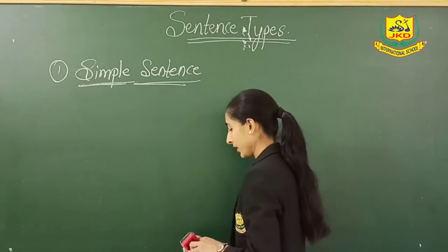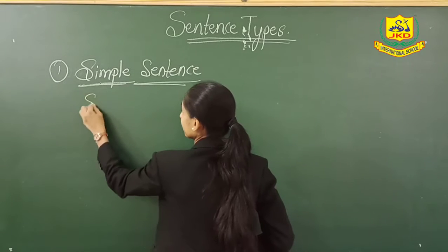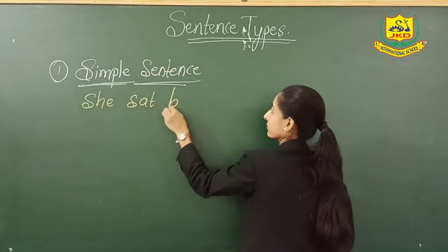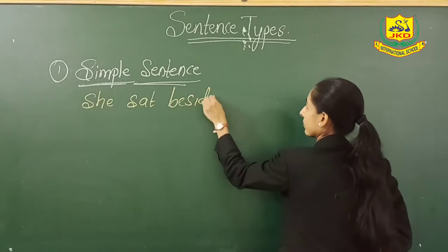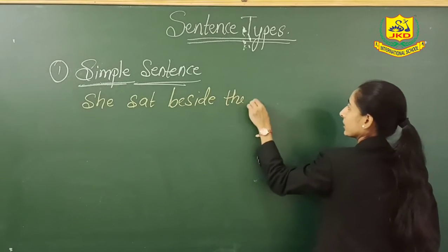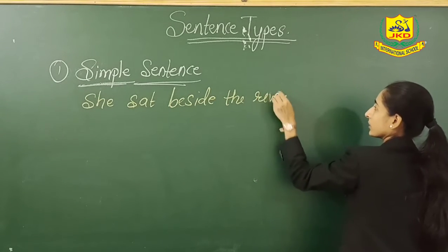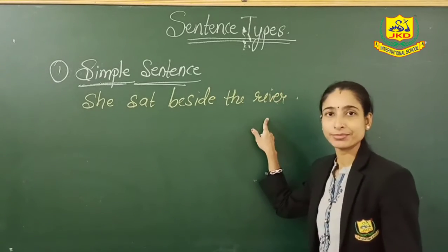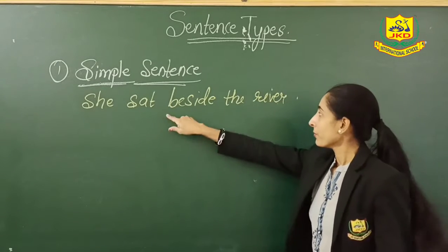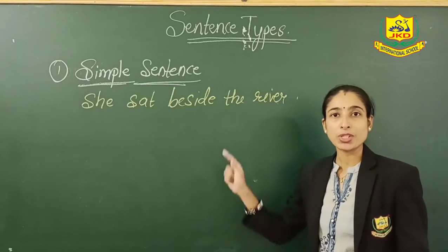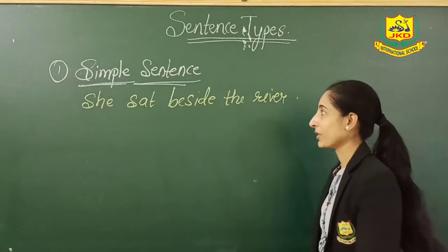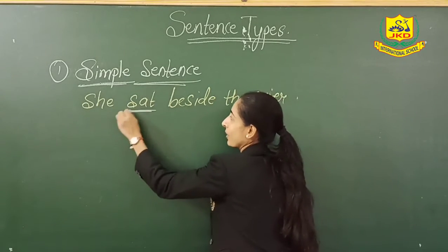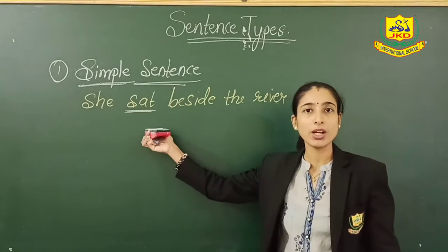Just look at this. If I write here: she sat beside the room. Now, where do you find the verb? Do you see any verb? Yes. Where do you see the verb? Here is the verb — 'sat' is the verb. 'Sat' is the past tense of 'sit'.